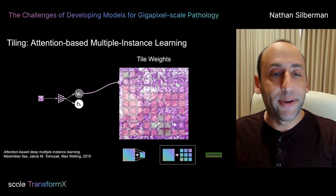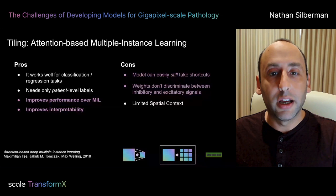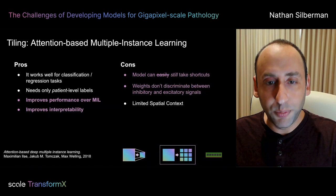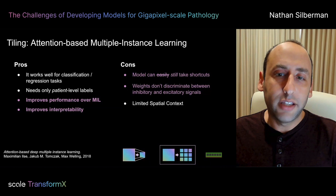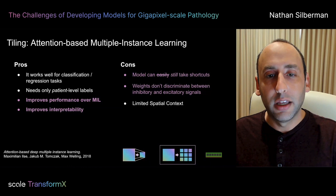One really nice aspect of attention-based MIL is that we can visualize where the model is attending to, which makes interpreting what the model is doing much easier for both clinicians who need to trust these models and machine learning practitioners themselves. Overall, attention-based MIL approaches do improve performance and help interpretability. Unfortunately, the model generally speaking can still take some shortcuts, and the weights are a little bit limited. Since the model aggregates over all tiles to produce a single prediction, it's possible to have low weights for a cancerous tile if another cancerous tile has already been highly weighted.